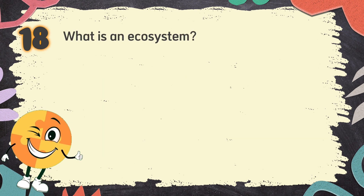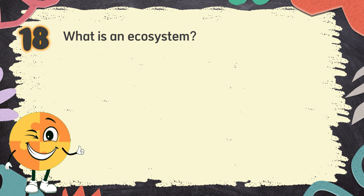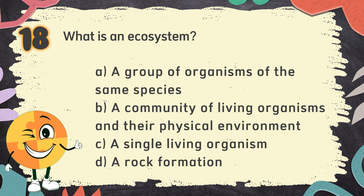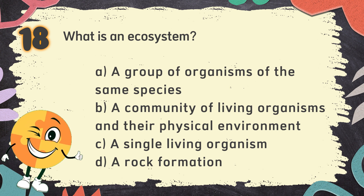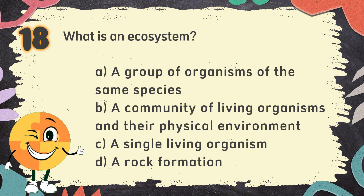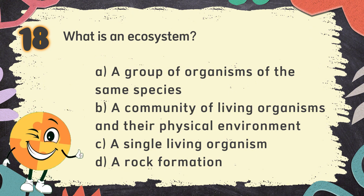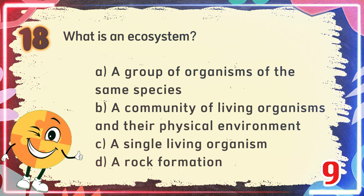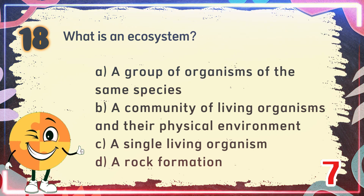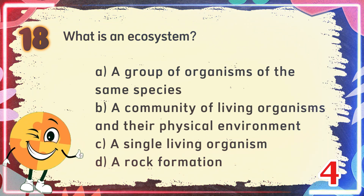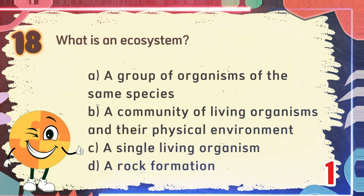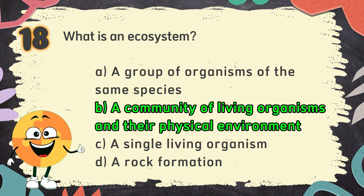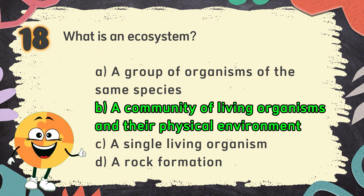Number 18. What is an ecosystem? The choices are A. A group of organisms of the same species, B. A community of living organisms and their physical environment, C. A single living organism, D. A rock formation. The correct answer is B. A community of living organisms and their physical environment.